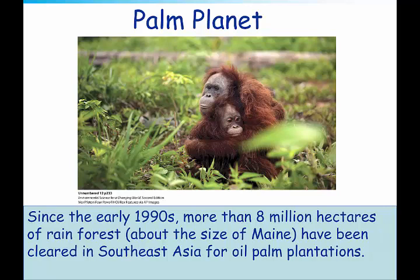In 2015, Indonesia's greenhouse gas emissions exceeded those of the US due to forest clearing and burning. Greenhouse gas emissions are really from the burning of fossil fuels, and the US has always been number one with that. But the burning and cutting down of the forest in Sumatra has generated more greenhouse gases than those produced in the US.